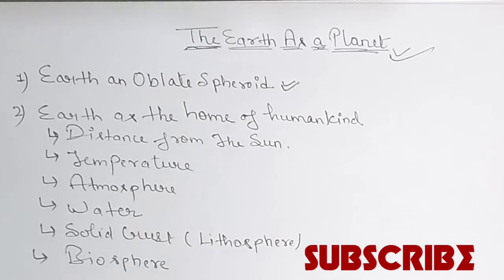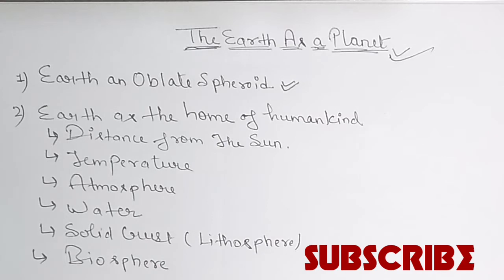If we talk about the Earth as an oblate spheroid, it means that the shape of the Earth is not spherical — it is bulged at the equator and flattened at the poles. This can be proved from the fact that the diameter of the equator is 12,756 km, but the polar diameter of the Earth is 12,714 km. The difference in diameter proves that Earth is not a perfect sphere.